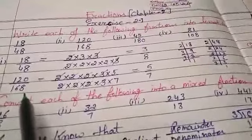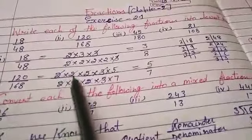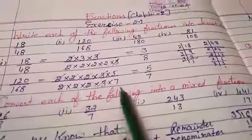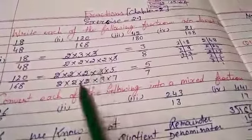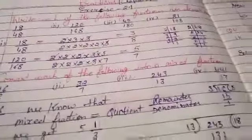120/168 is your second question. Make prime factors of 120 that are 2, 2, 2, 3, 5 and 168 that are 2, 2, 2, 3, 7. Now cut common factors, then we are left with 5/7 as your lowest term.